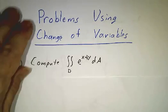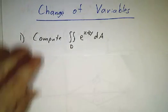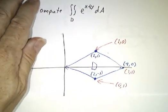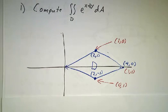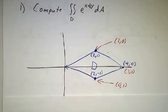So the first one is we want to compute the integral of e to the x plus 2y over a parallelogram. This is a parallelogram with vertices at (2,1), (4,0), (2,-1), and the origin.